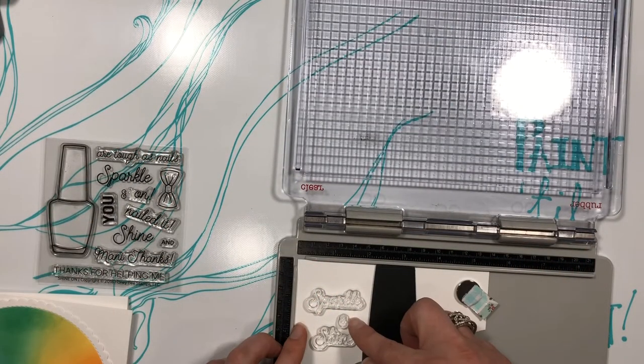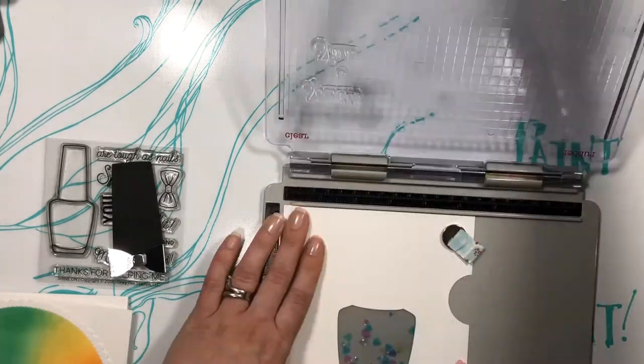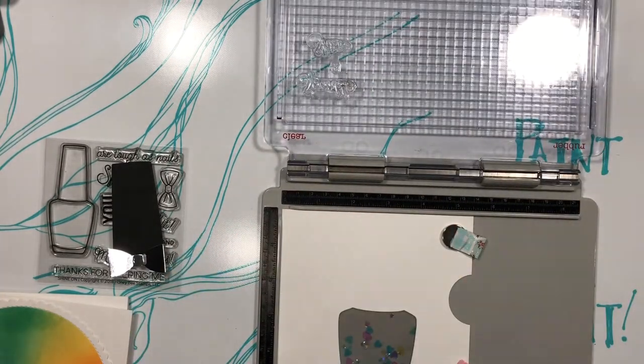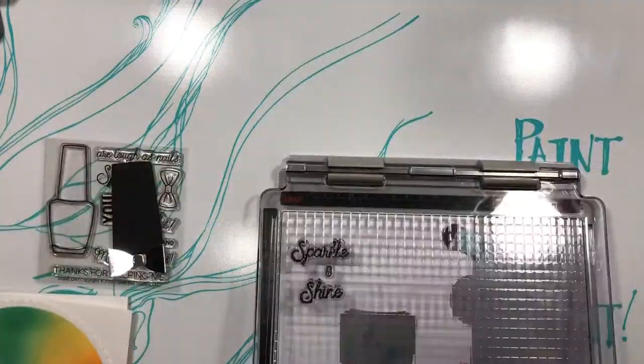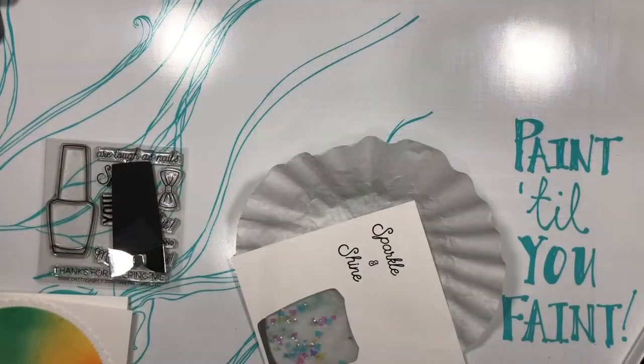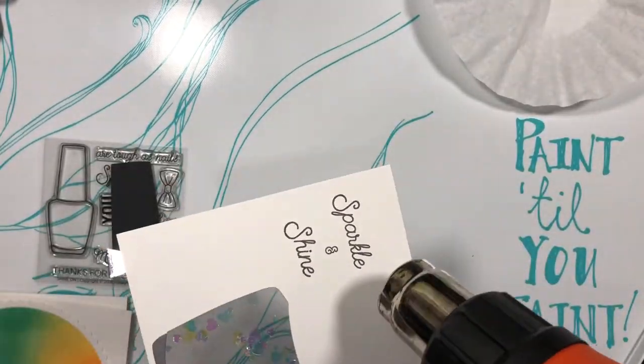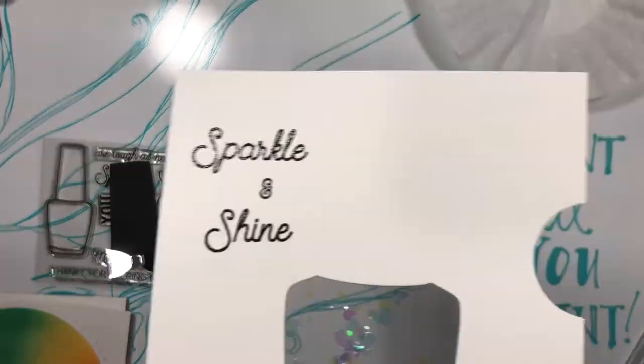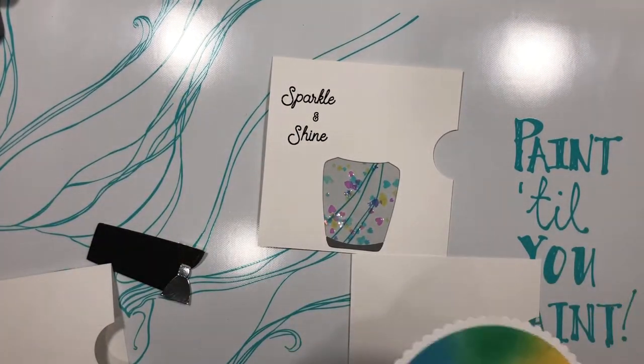Before gluing down the top of the bottle to the card I'm just going to stamp out my sentiment. The stamps I'm using come from the Shine On stamp set and I love how they coordinate perfectly with the nail polish bottle die. I'm stamping out the stamps using some VersaFine onyx black ink and then I'm going to be heat setting it with some clear embossing powder. I find that by using a clear embossing powder I don't have to worry about those stray little black embossing powder specs.